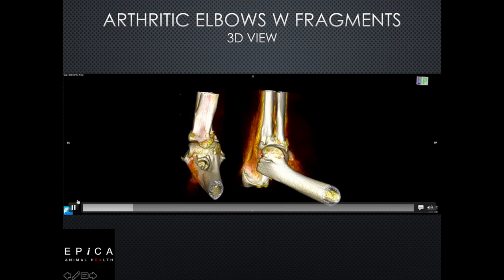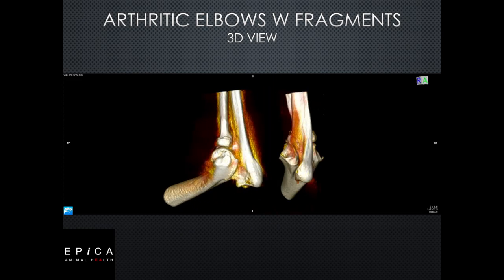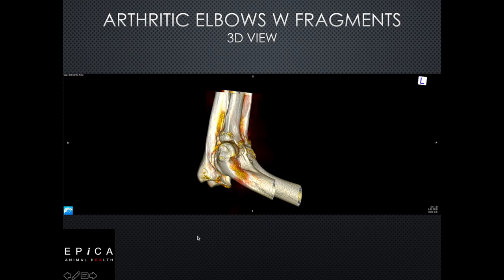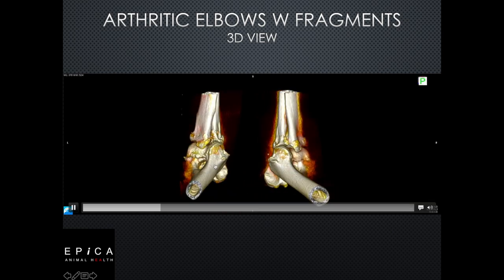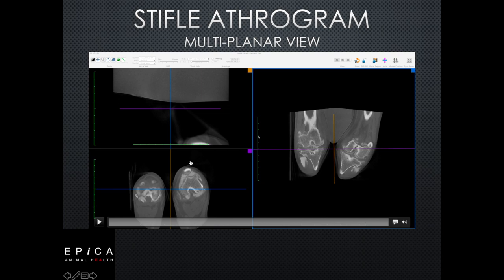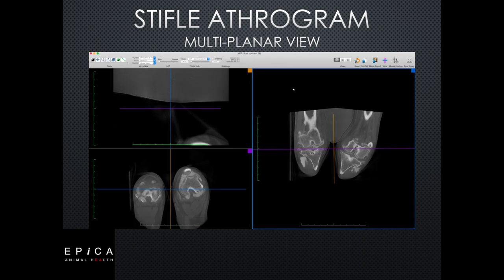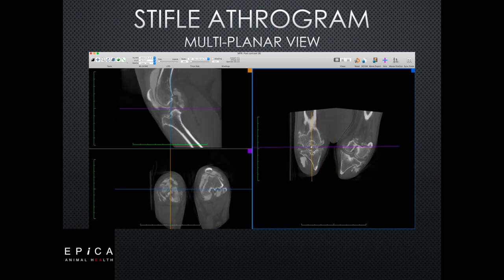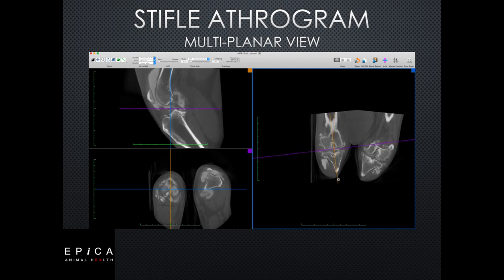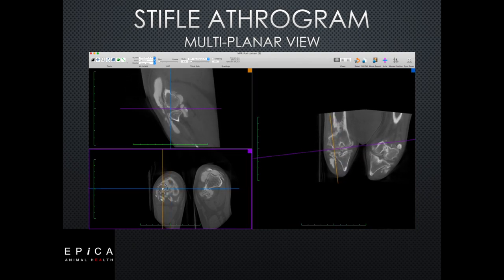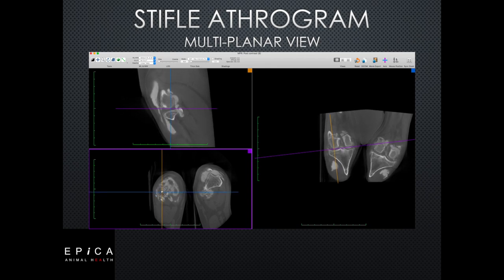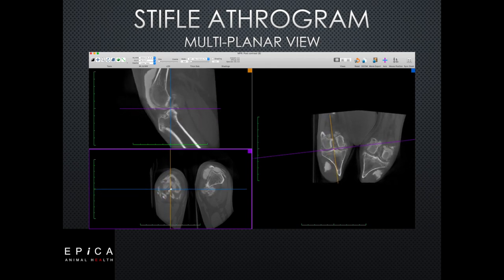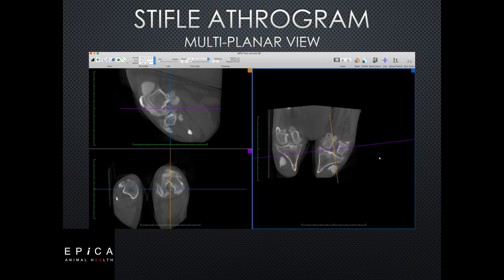This is what a 3D view of the elbows would look like. 3D is automatic — we don't have to do any extra work to get 3D on the screen — and the image quality is impeccable. Stifles are a place where we can use contrast as an intraarticular injection at a 1-to-10 ratio of OmniPaque to saline. We inject it into the joint space, flex the joint for about 30 seconds, and the contrast tells the radiologist and surgeon where there may be problems with soft tissue structures such as the meniscus or the cruciates.